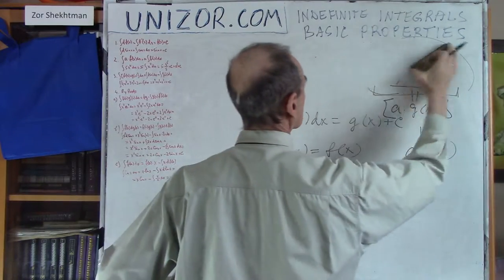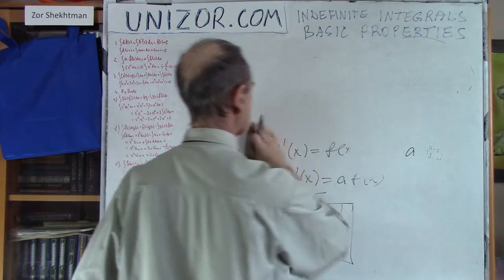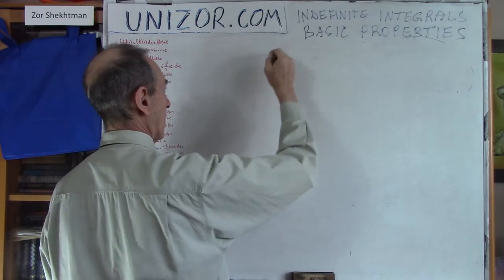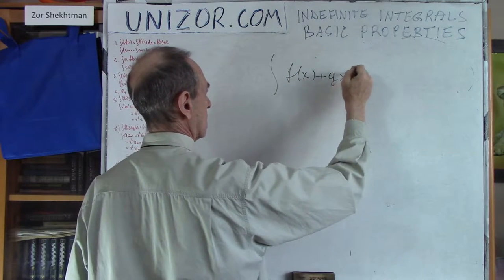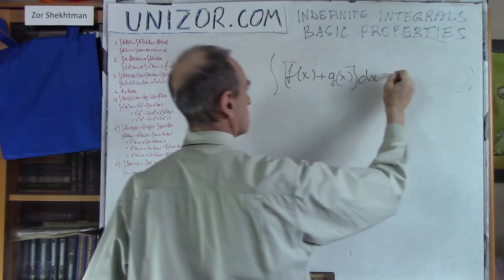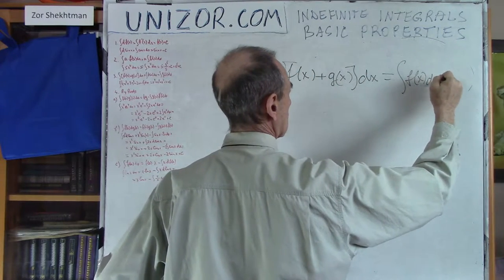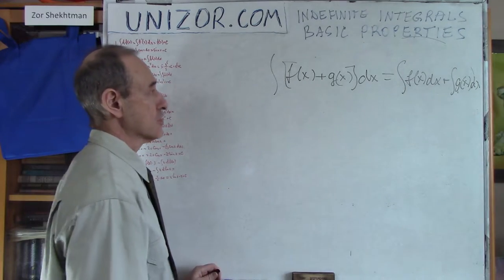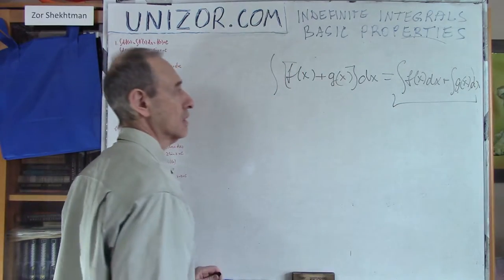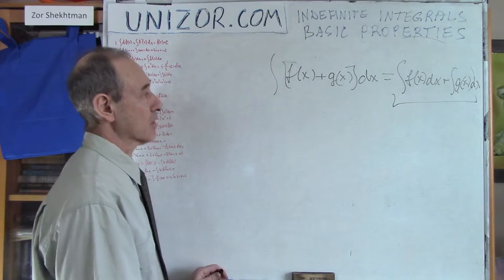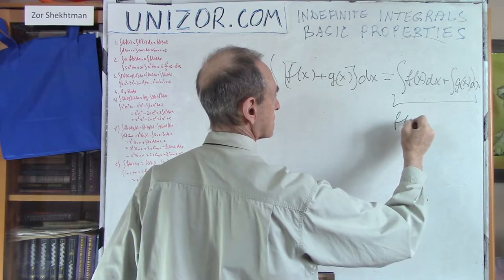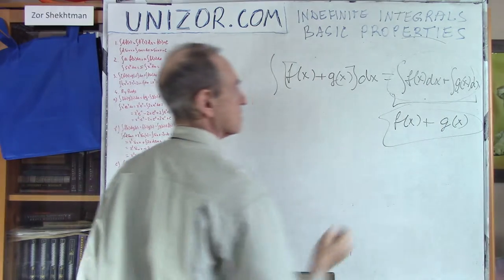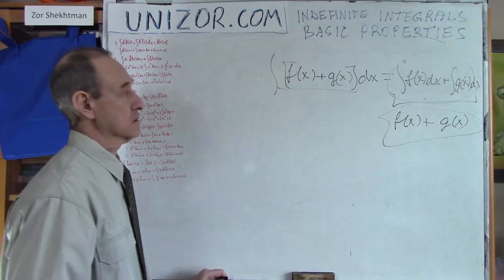And absolutely analogous is another theorem about the sum of two functions: the integral of f(x) plus g(x) dx is equal to the sum of integrals. The proof is exactly the same — differentiate the sum. The derivative of a sum equals the sum of derivatives, so derivative of the first integral is f(x) and derivative of the second is g(x).